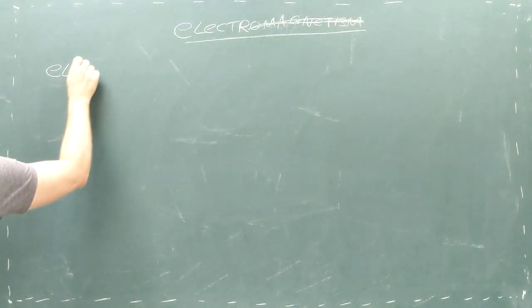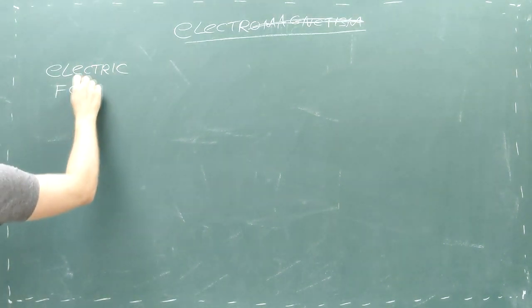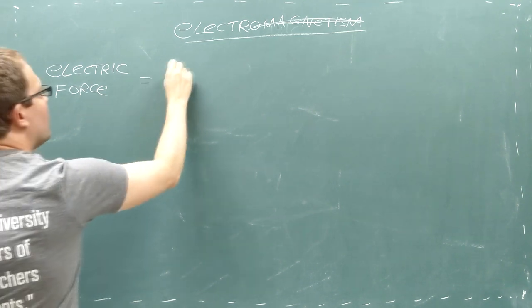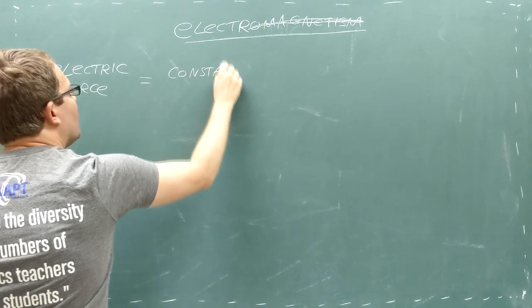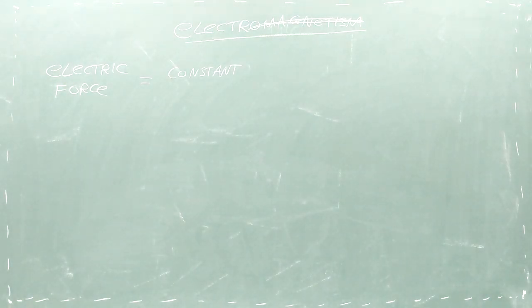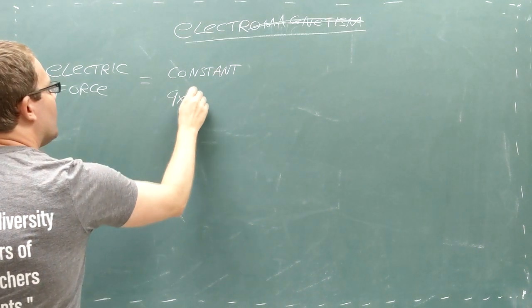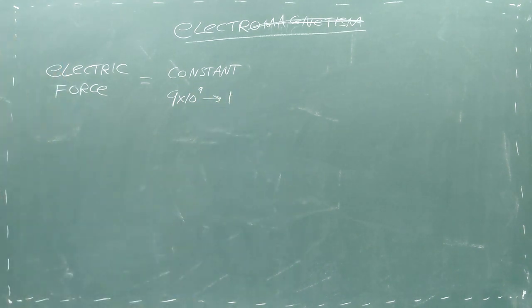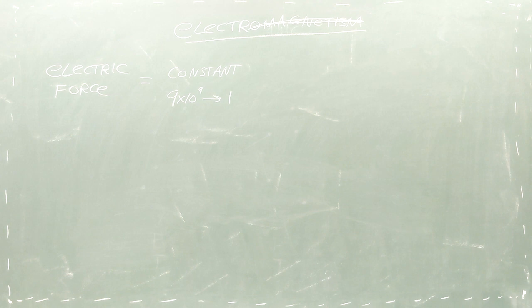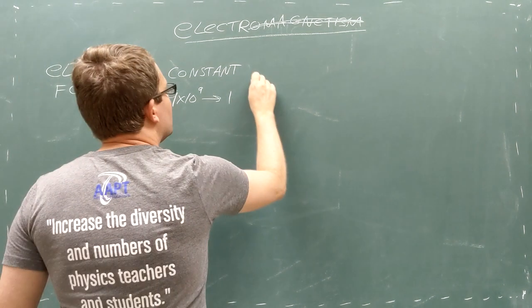The electric force depends on a number of factors. First, there's a constant that's the same throughout the universe. Although in the real world this number is very, very big, in our code we're going to set it equal to 1 to make the math simpler. We can change it later if we want to calculate real world forces.